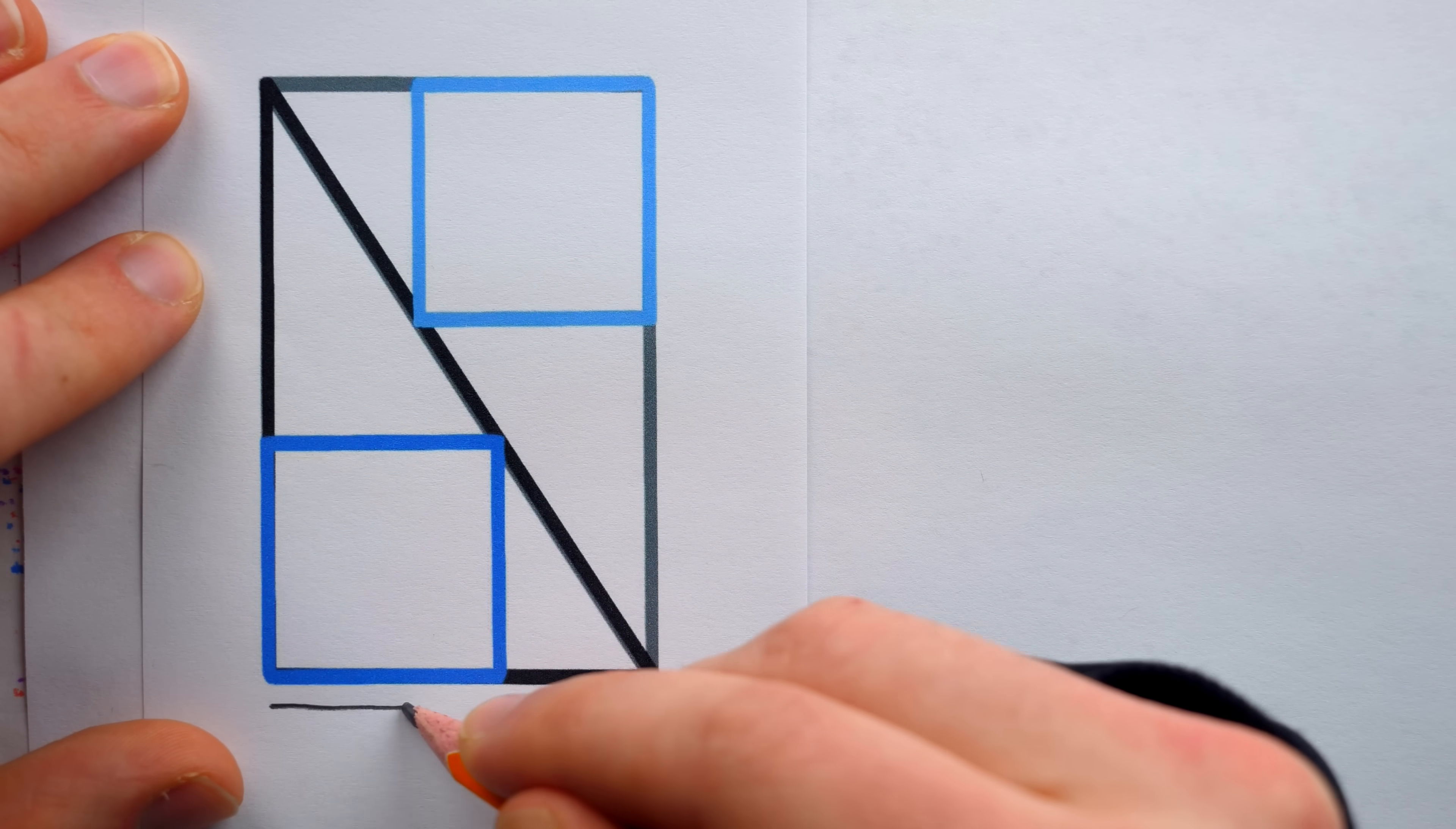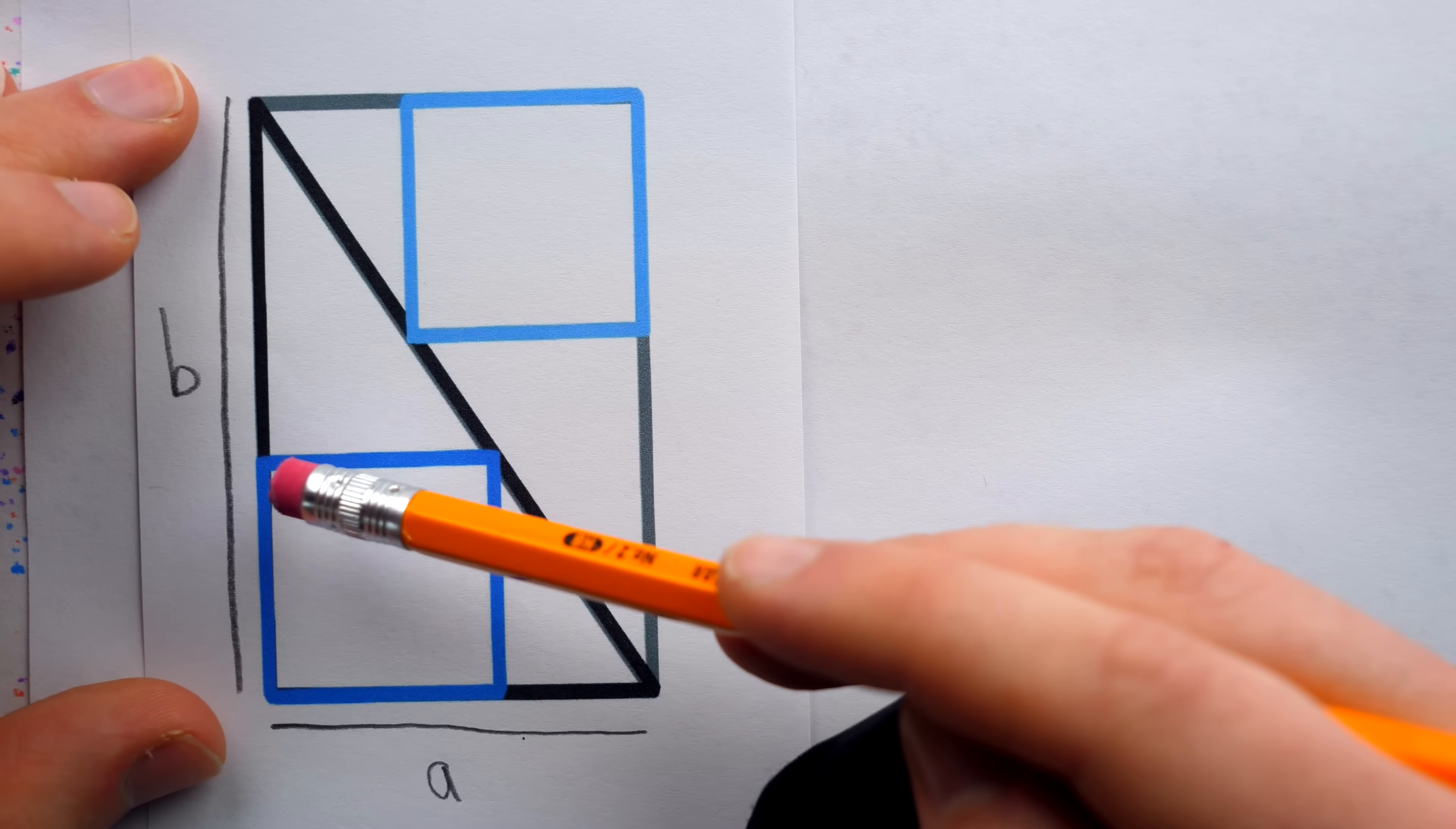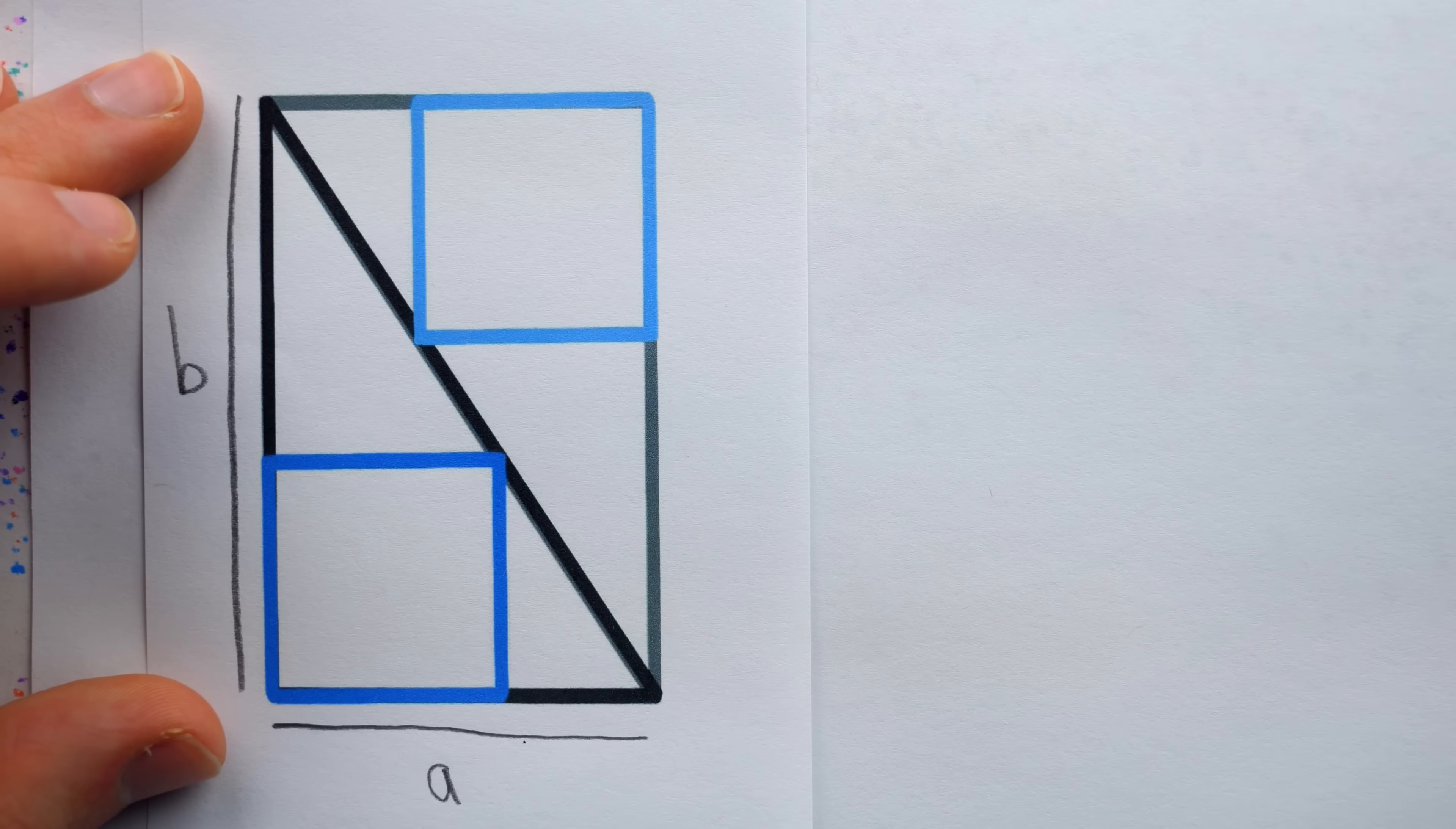So now, by duplicating the original figure, we have a complete A by B rectangle. I brightened the colors on the duplicate figures, so you can see this light blue square, that's a duplicate of the original dark blue square. The light gray triangle is a duplicate of the black triangle, and so on.